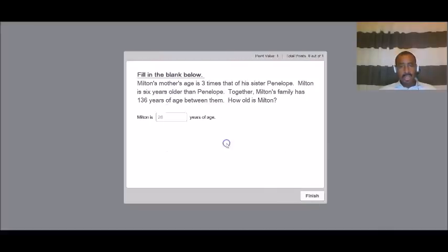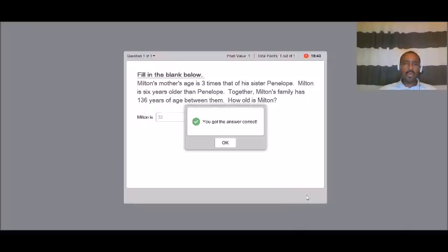So we know that 26 if we put 26 there, we know that's going to be wrong. But now we go ahead and put 32 submit. And of course, that's correct because that is Milton's age.